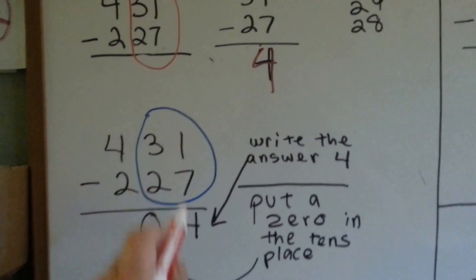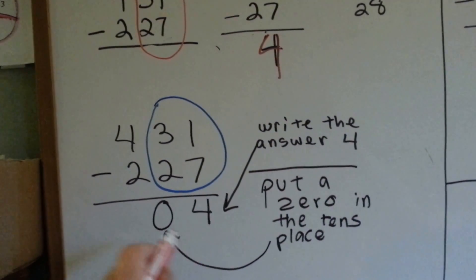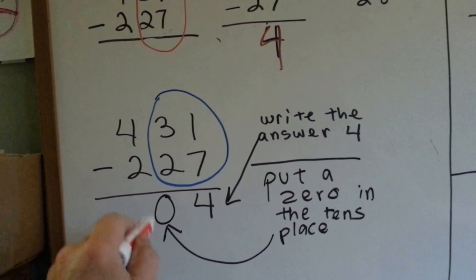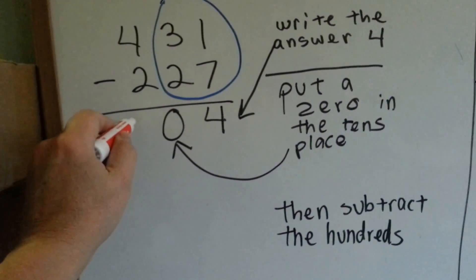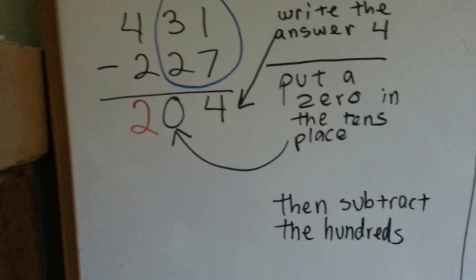We put the 4 in the ones place and we just automatically put a 0 in the tens place. Then we can subtract the hundreds. We get 204. Let's try it again with a different one.